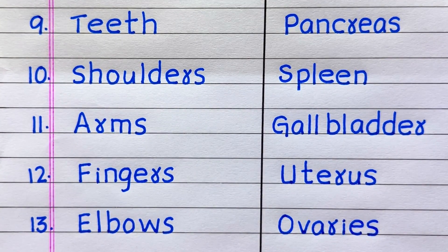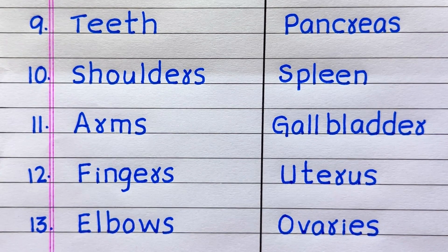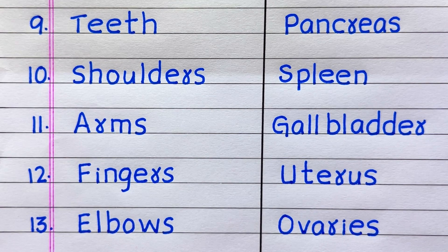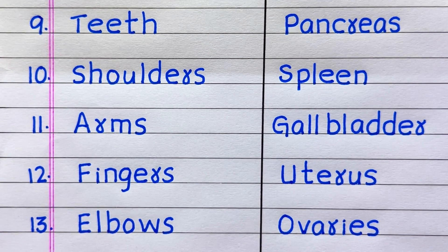The ninth example of an external organ is teeth, tenth shoulders, eleventh arms, twelfth fingers. The ninth example of an internal organ is pancreas, tenth spleen, eleventh gallbladder, twelfth uterus, thirteenth ovaries.